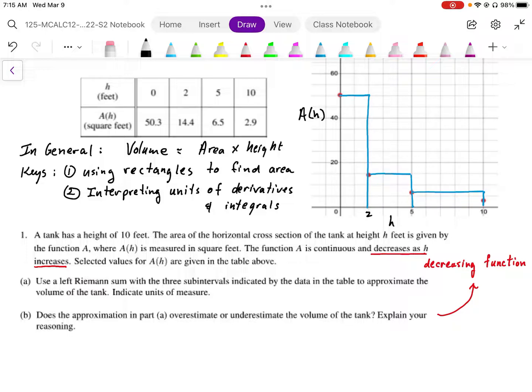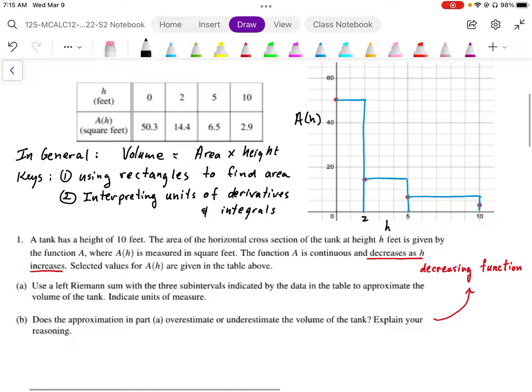Selected values of h are given in a table. Part A says use a left Riemann sum with three subintervals indicated by the data in the table to approximate the volume of the tank. First, we need to understand that the area in this graph that I've drawn is going to give us the volume of the tank.